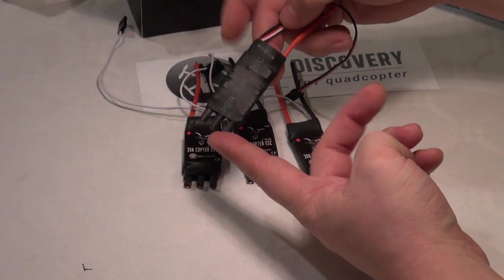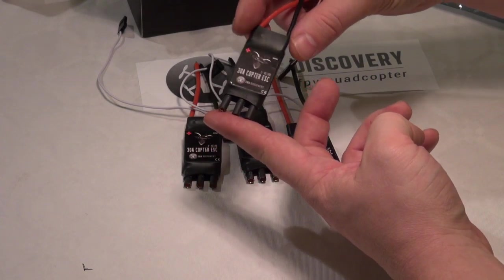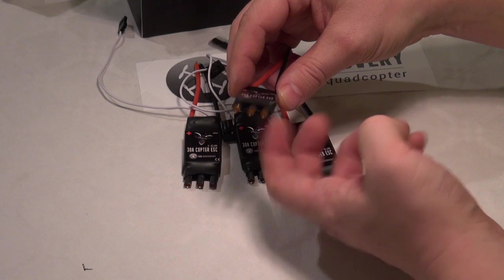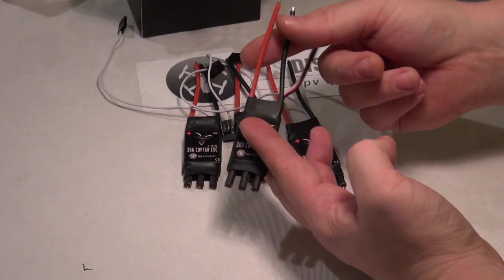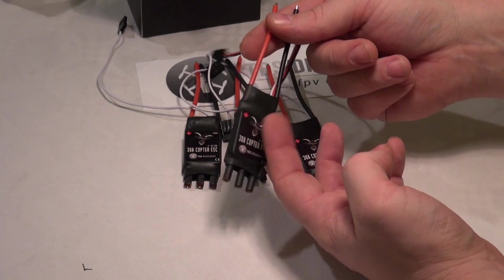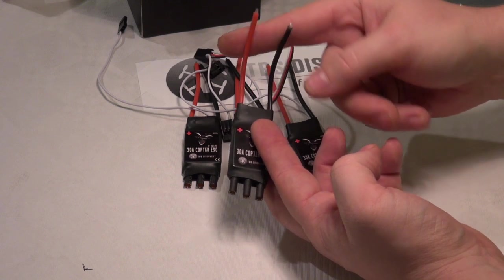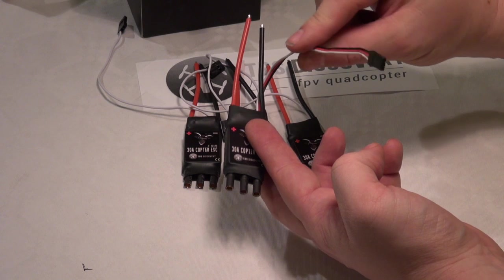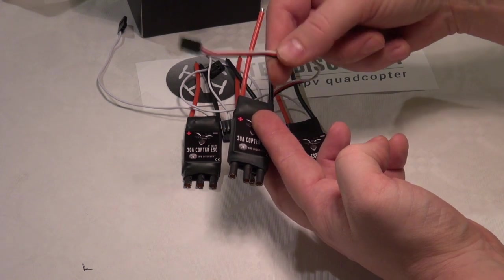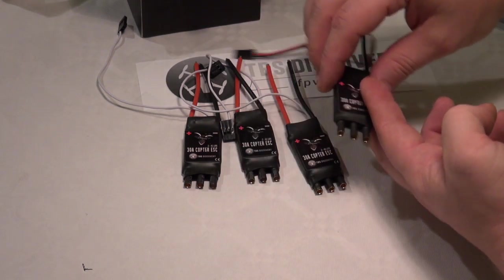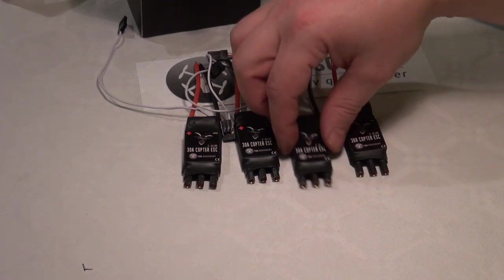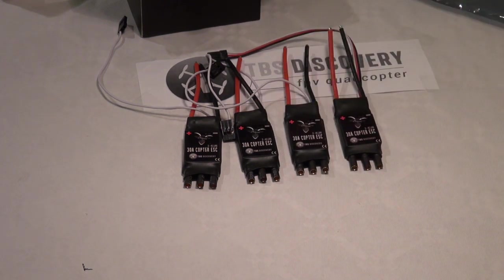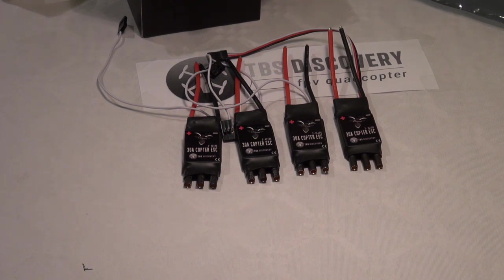The back side, the front side, the connectors. We have 16 AWG power lines and the servo wire. So that's how the 30-amp copter ESC from TBS looks like.